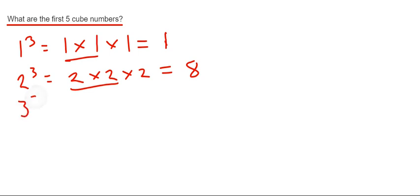Our next cube number would be 3 cubed, so that would be 3 times 3 times 3. Work out 3 times 3, which is 9, and then times the answer by 3, which gives us 27.